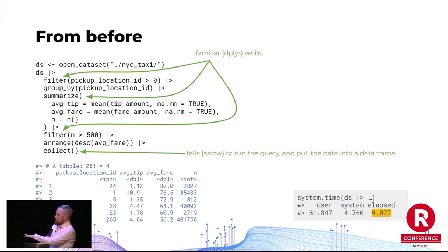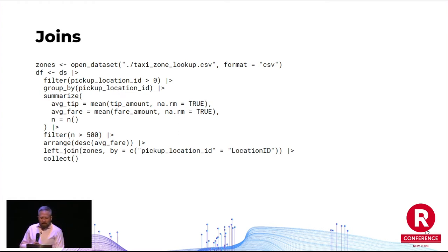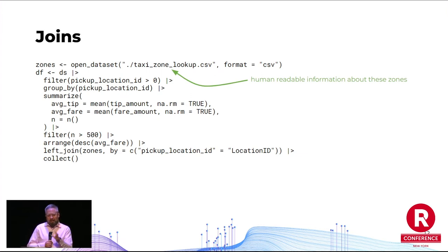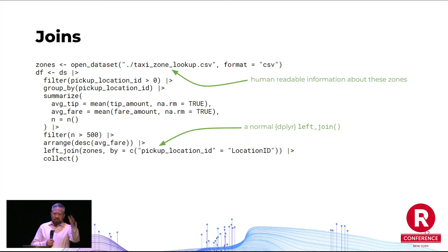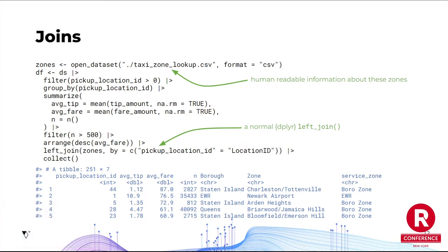One of the new features we added are joins. The pickup zone ID is a pretty useless indicator for a human — I don't know what zone 1 or zone 28 is. But there's a helpful CSV file that gives you zone lookups. So we can load that file as a second dataset called 'zones,' run the same filter/group-by/summarize query, and then at the end just do a left join on that zone lookup to get nice, human-readable zone names. It turns out zone 1 is Newark, which is a little surprising for New York City taxi data. This took about 7 seconds — with some disk cache from the previous query — or around 10-11 seconds when run fresh.